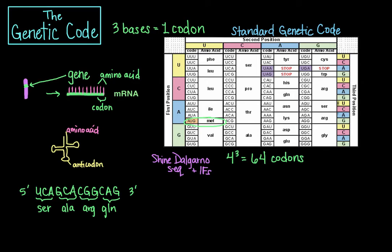The three stop codons are UAA, UAG, and UGA. Stop codons are also known as termination or nonsense codons. They signal the release of the nascent polypeptide from the ribosome, because there is no corresponding tRNA that has anticodons complementary to these stop signals, and so a release factor binds to the ribosome instead.